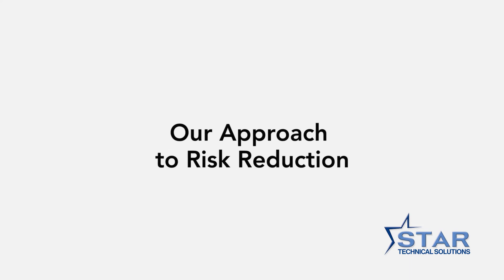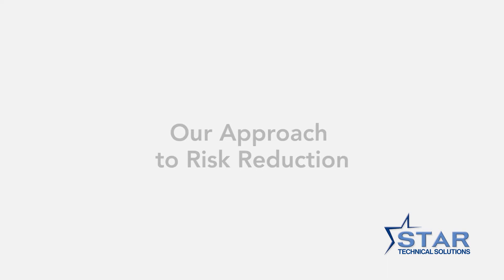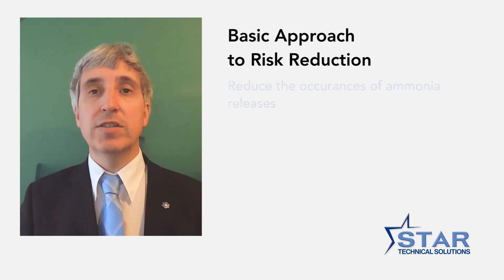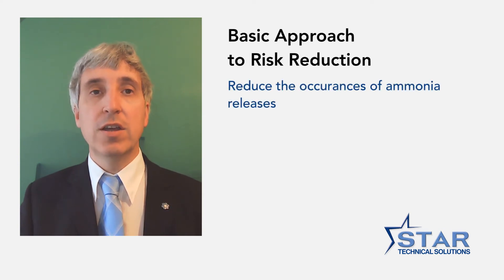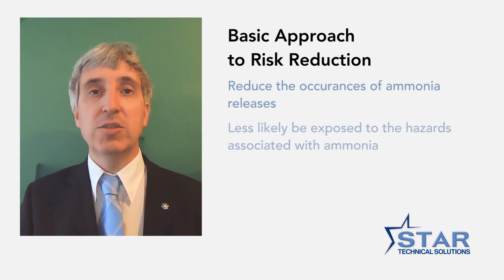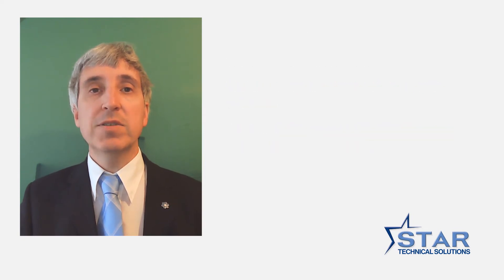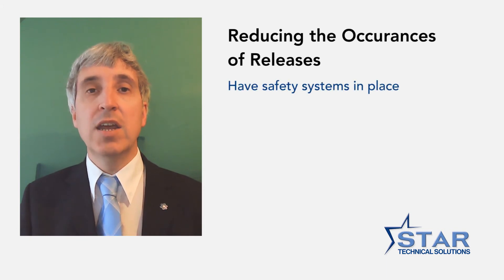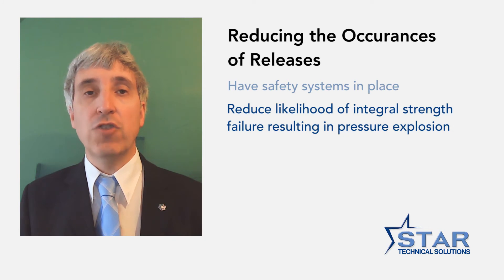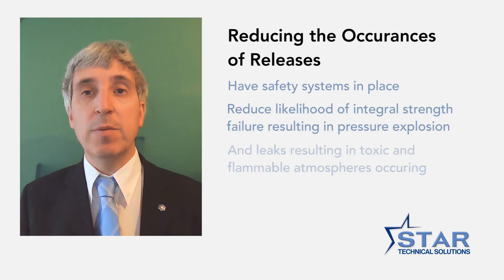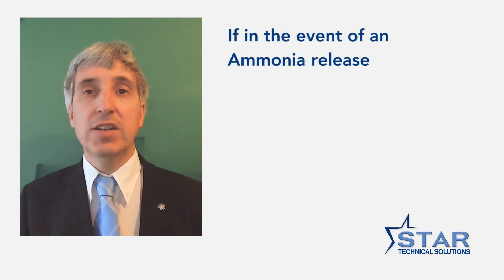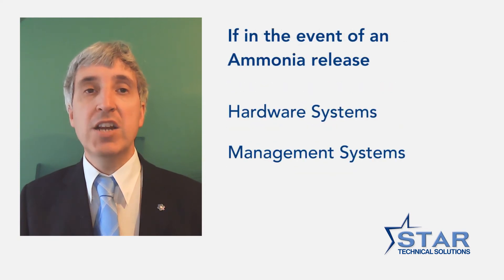We will now move on to the Star Technical Solutions approach to risk reduction. We work on the basic concept that if the occurrences of ammonia releases are reduced, persons will less likely be exposed to the hazards of ammonia. Steps to reduce the likelihood of an ammonia release include having appropriate systems in place that reduce the likelihood of a failure of the system's integral strength, resulting in a pressure explosion or from leaks that may result in a flammable or toxic gas atmosphere occurring. And in the event of an ammonia release, there should be appropriate hardware and management systems in place.